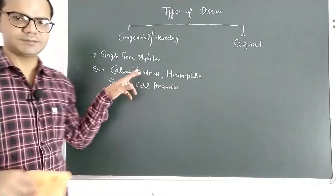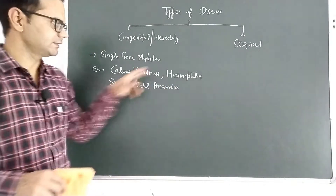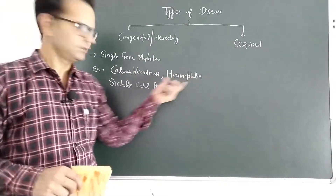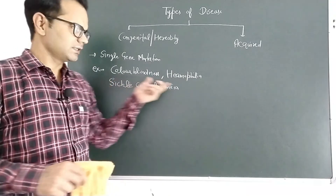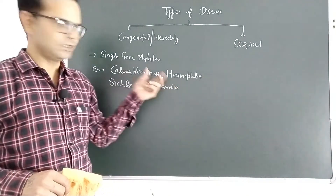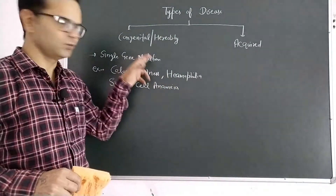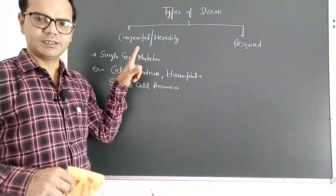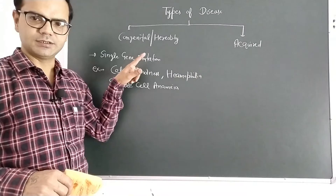Examples of single gene mutations are color blindness, hemophilia, and sickle cell anemia. These diseases occur due to one mutant gene.